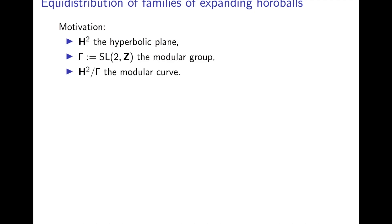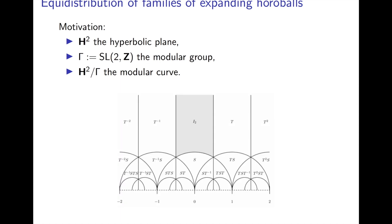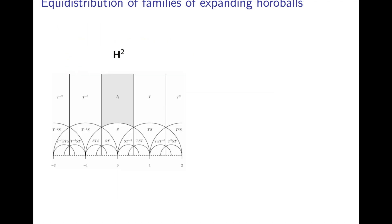Let me begin by explaining what equidistribution looks like in a very classical setting. We're going to look at H², the hyperbolic plane, drawn as the upper half space. Gamma is going to be the modular group, SL₂(ℤ), acting on H² by Möbius transformations, and finally we're going to look at the modular curve, which is H² mod gamma. Let me draw a picture of the usual fundamental domain for such an action, and describe what these expanding families of horoballs look like in this picture — leaving H² on one side and drawing the modular curve as the quotient.